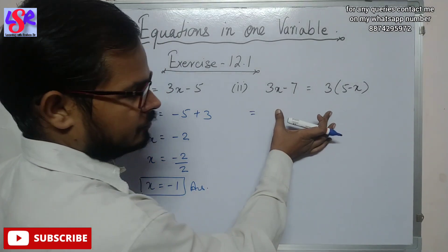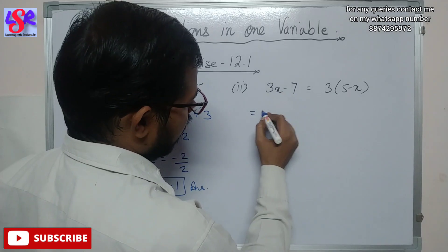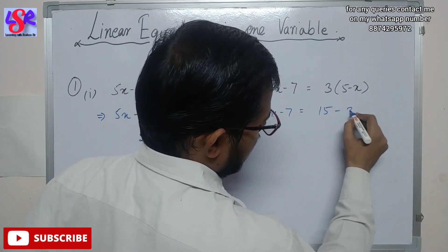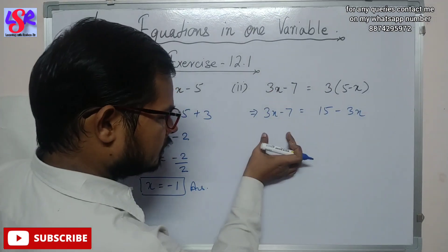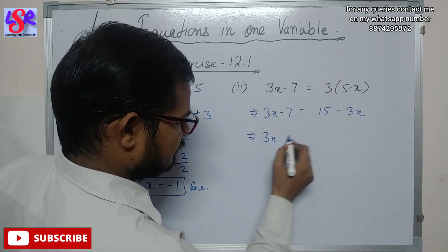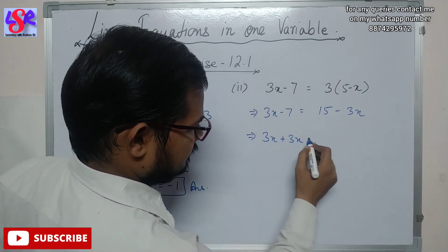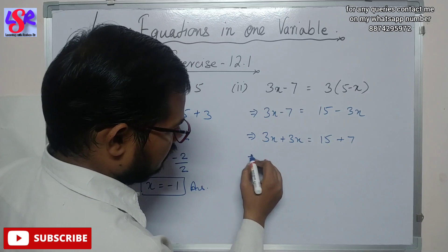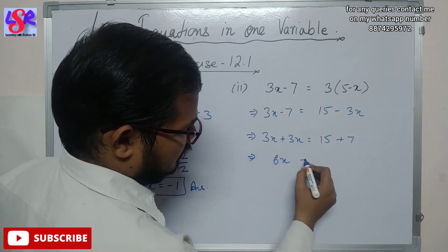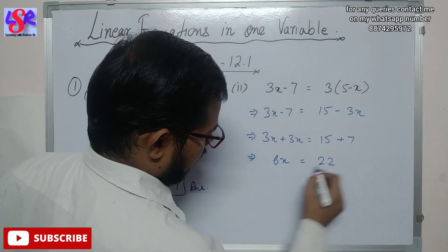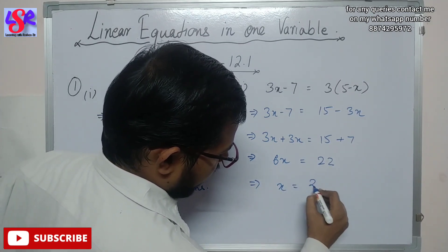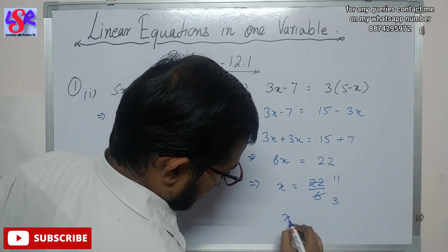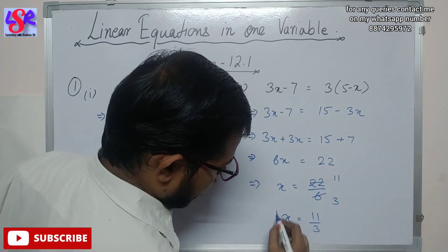Let's see the second part. We open the bracket, so 3x minus 7 equals to 3 into 5, that is 15, minus 3x. Transposing, 3x plus 3x equals to 15 plus 7, giving 6x equals to 22. So x equals to 22 upon 6, which simplifies to x equals to 11 by 3 as answer.